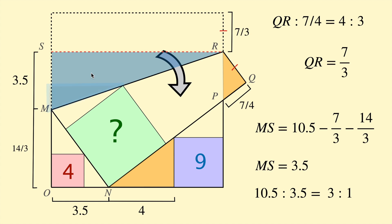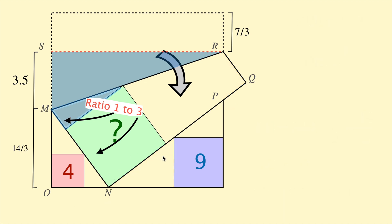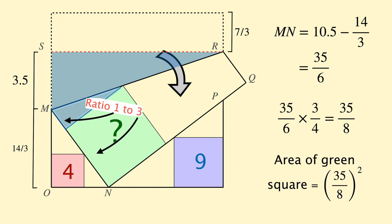Notice that this right triangle is similar to this little one in here. So I know the side length of the square to this little length is 3 to 1. So these two lengths are in the ratio 1 to 3. So the side length of the square is 3 parts. This little length is 1 part of this length MN. This allows us to solve for the side length of the green square by multiplying MN by 3 on 4. So let's go ahead and do that. To finish off, MN is 10.5 take 14 on 3. That gives us 35 on 6. And then multiply that by 3 on 4. And we get 35 on 8. So the area of the green square is actually 35 on 8 all squared.